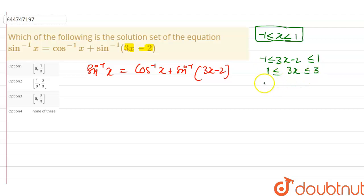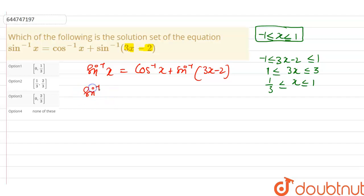So x lies between 1/3 and 1. Now to solve the equation, we rearrange: sin⁻¹x minus cos⁻¹x is equal to sin⁻¹(3x - 2).